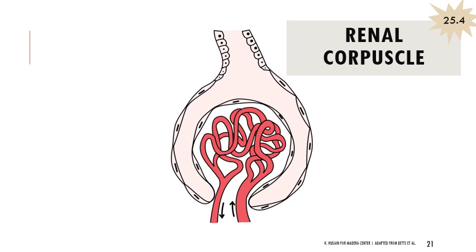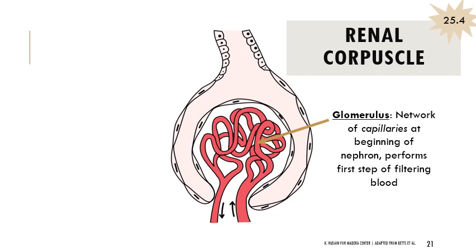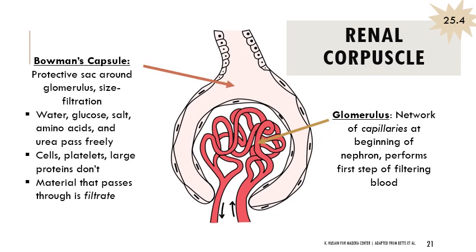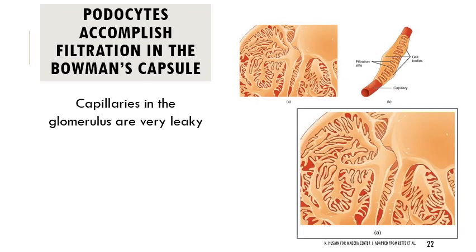Anatomically, filtration happens at the renal corpuscle, which consists of the glomerulus (a network of capillaries) and Bowman's capsule. Here we think about size filtration: smaller molecules like water, glucose, salts, ions, amino acids, urea, and uric acid pass freely through the filtration unit. But cells, platelets, and larger proteins should not pass through — if they do, we consider there to be glomerular damage. Material that manages to pass through is considered filtrate.